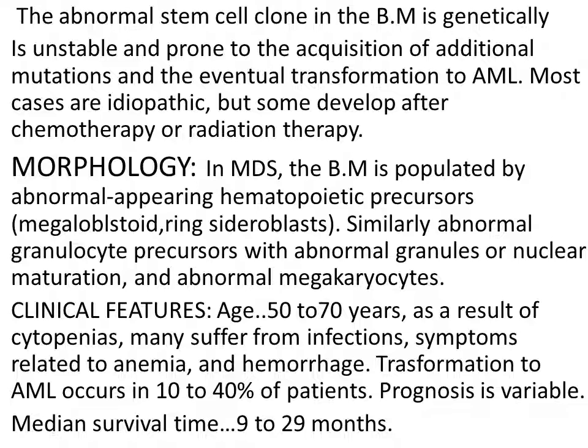Similarly, there are abnormal granulocyte precursors with abnormal granules and abnormal nuclear maturation. There may be some abnormalities in the granulocyte precursors — myeloid precursors. The granules in the cytoplasm, which are normally fine granules in neutrophils and their precursors, may be abnormally large. And there may be some changes in the nuclear maturation.